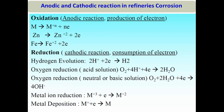In aerated HCl, both H⁺ reduction and oxygen reduction occur as cathodic reactions, forcing a much higher anodic dissolution rate. If metal ions that can be further reduced are also present, corrosion rate increases even more. If one reaction rate goes high, the other automatically goes high; if one goes low, the other goes low — they are mutually dependent.